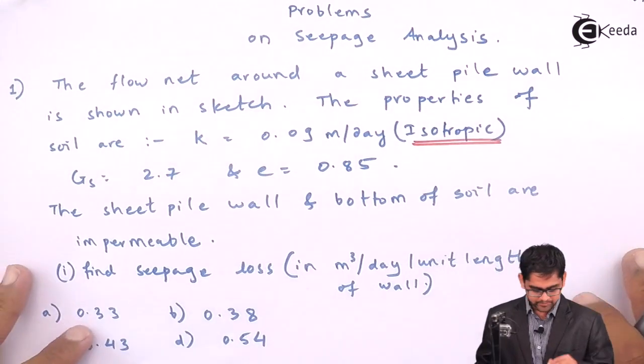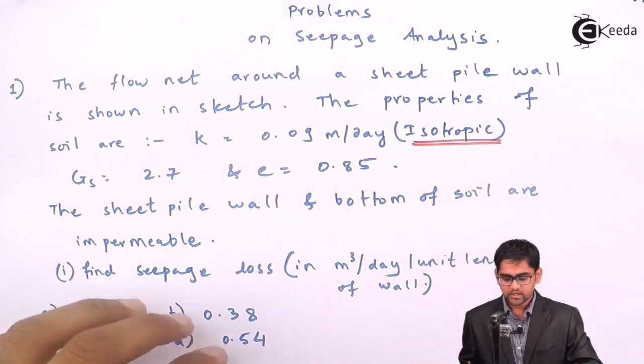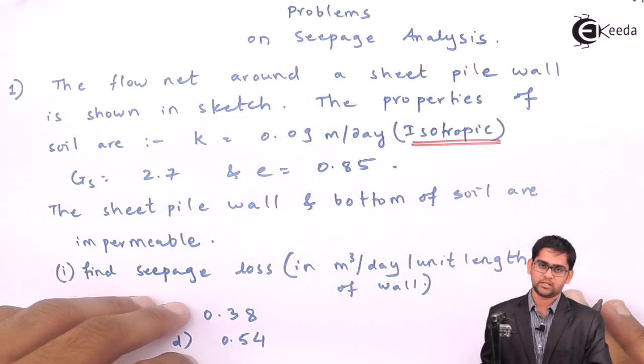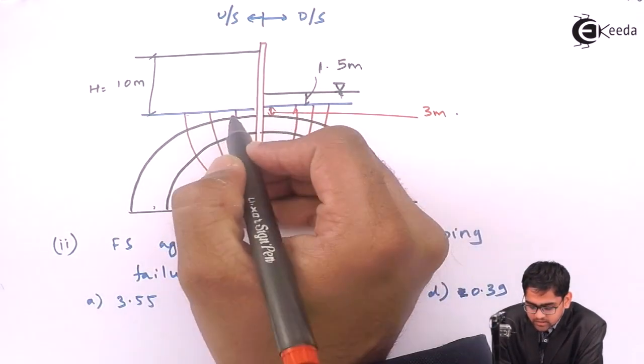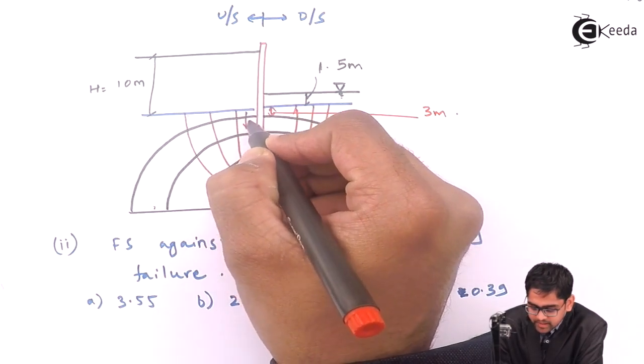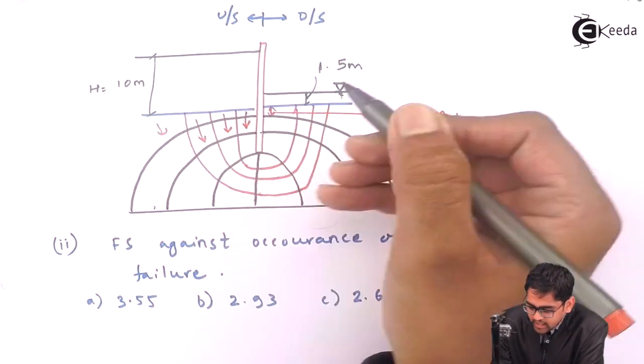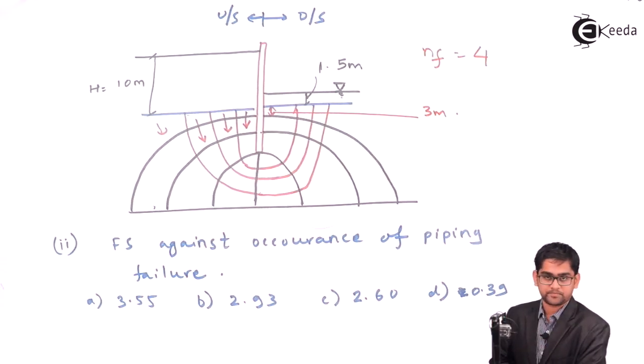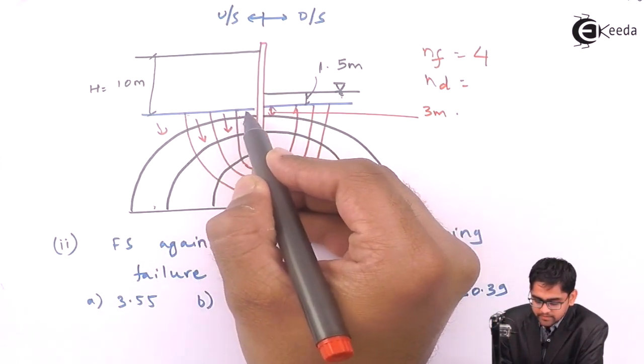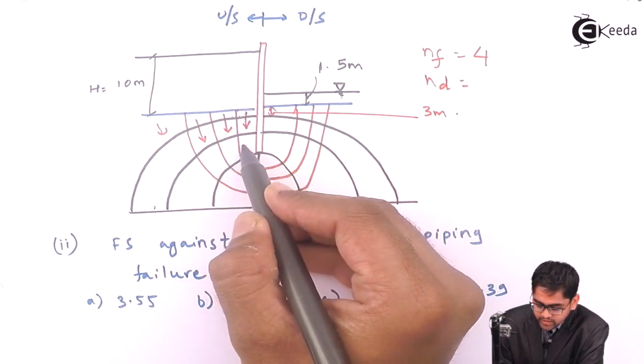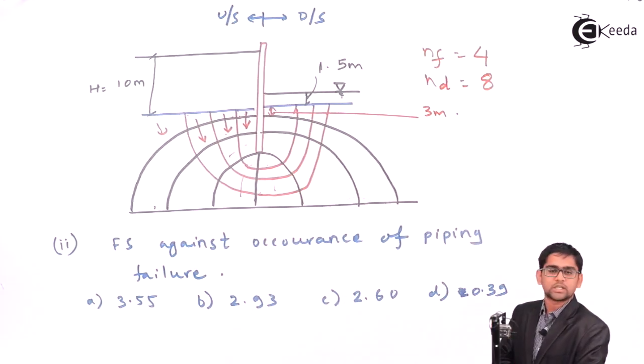To begin with this problem, you need to first calculate the number of flow channels and number of potential drops. By looking at the flow net, this will be the first flow channel, this is second, this is third and this is four. So NF number of flow channels are 4. Number of potential drops: from this to this 1, 2, 3, 4, 5, 6, 7 and 8.